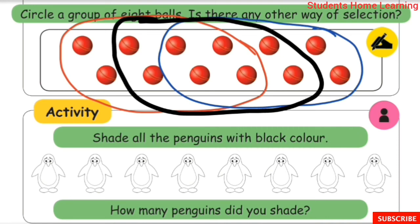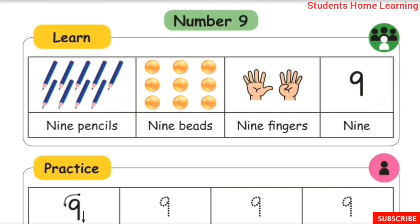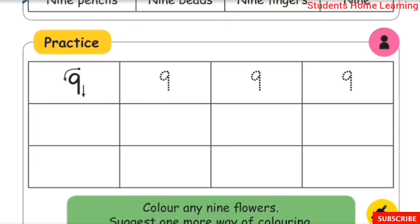Activity: shade all the penguins with black color. Shade the penguins black. How many penguins are shaded? — 8 penguins shaded.